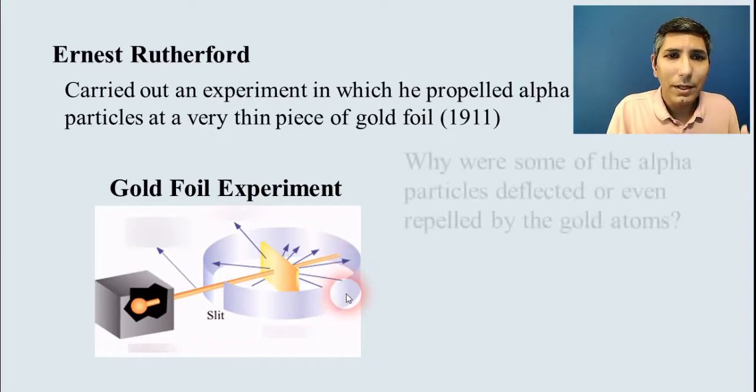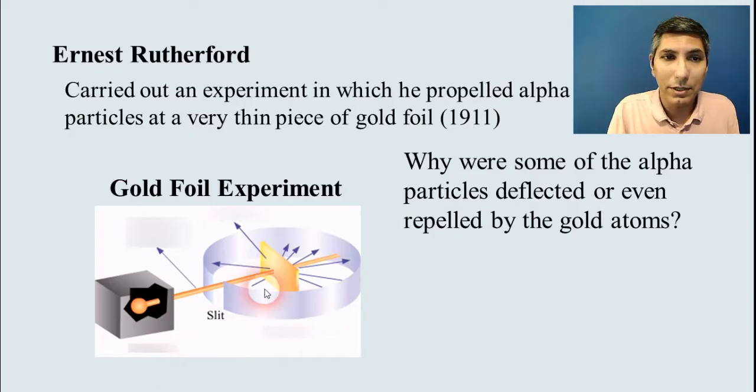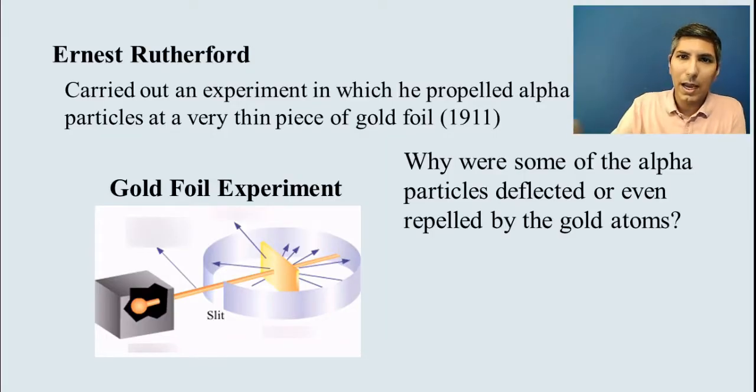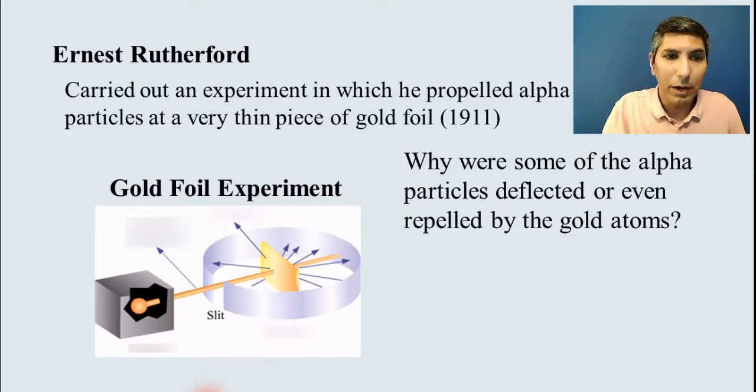Well, he found that that's not exactly what happened. As you can see in this little cartoon here, some, and this is kind of exaggerated, but some of those alpha particles were deflected, and a very small fraction of these alpha particles actually were almost reflected completely and bounced off of the gold foil and came back almost in the same direction as it was shot out from, which was very surprising to him. He did not expect this to happen.